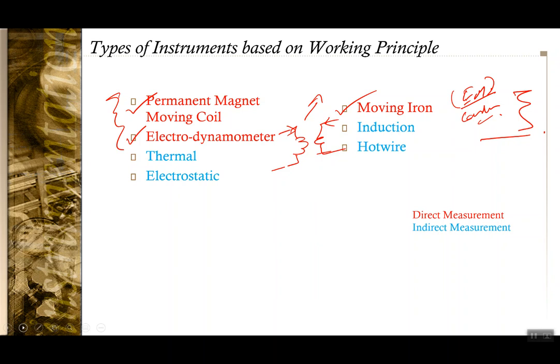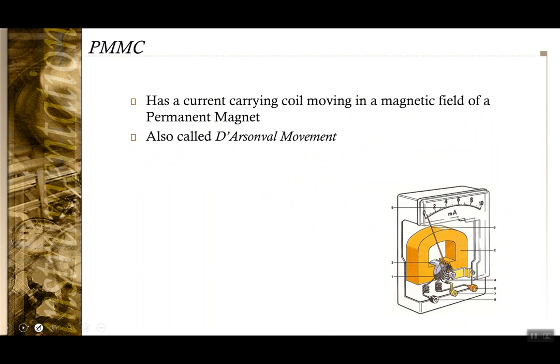In contrast, you have other types of instruments like electrostatic instruments, used to measure high voltages, and thermal instruments which use the I²R law to measure current. By observing how much heating occurs — the heat capacity of the current in heating a piece of wire — we relate temperature change to the equivalent current. These indirect measurement instruments can be used to measure electrical quantities via indirect effects.